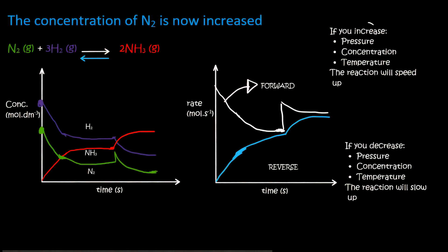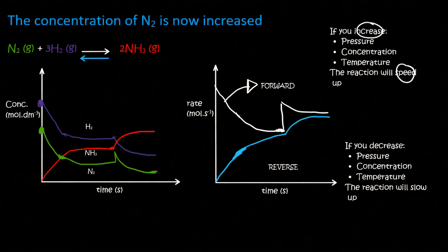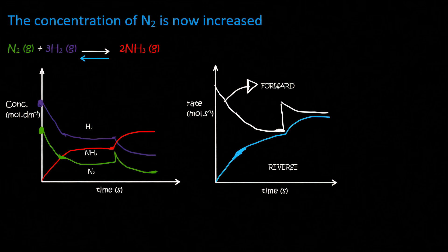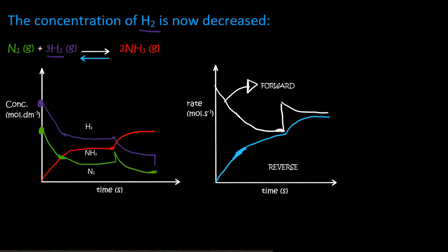If you increase pressure, concentration, or temperature the reaction will speed up. If you decrease any one of those three, the reaction speed will slow down. That has nothing to do with equilibrium — it is its own thing. Alright, so now that we have reached equilibrium for the second time, we're going to make another change. We're now going to decrease the concentration of hydrogen. Straight away on your concentration graph the hydrogen will drop. Now you need to think about Le Chatelier.